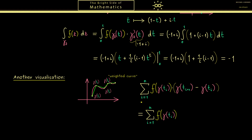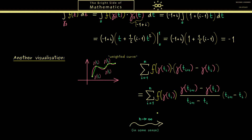For a Riemann integral, the difference t_{i+1} - t_i must be included, which we achieve by dividing and multiplying by this term. Now the expression looks like a normal Riemann sum, and in the limit we get a Riemann integral: the first part is f(gamma(t)), the last part is dt, and the middle part is an approximation of the derivative of gamma. In summary, we recover our original definition of the contour integral — this is another way to justify the definition. It is very important to remember this definition.